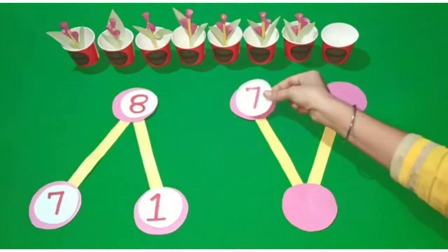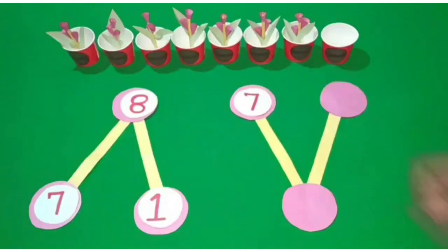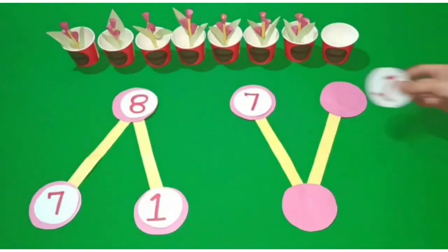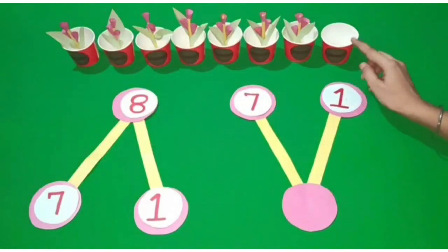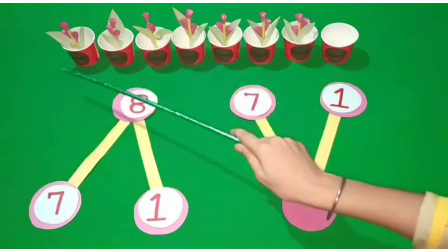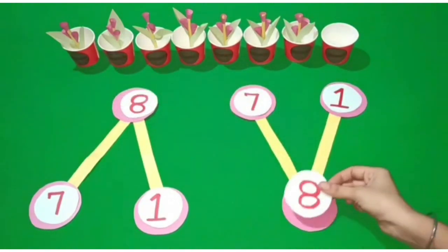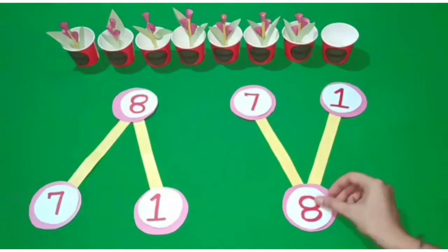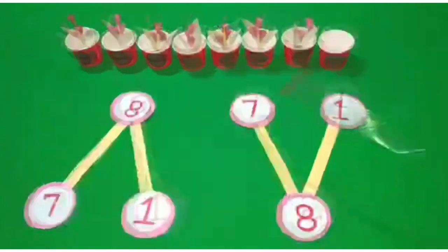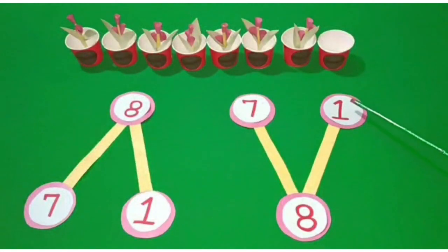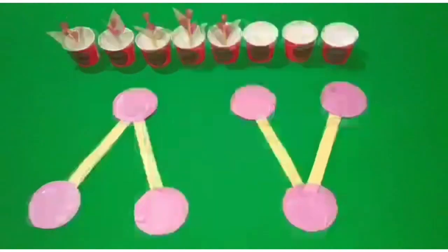There are flowers in 7 pots and no flowers in 1 pot. How many pots are there in all? There are 8 pots. 7 and 1 are 8 in all.